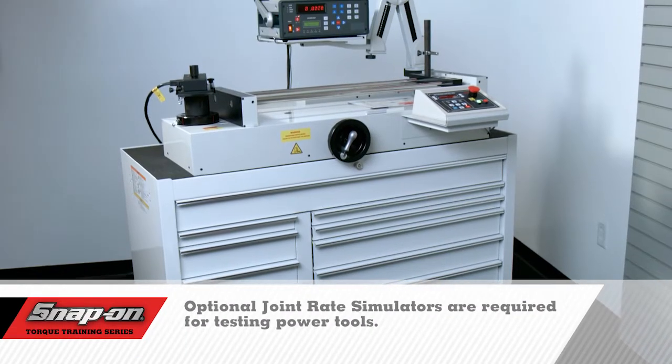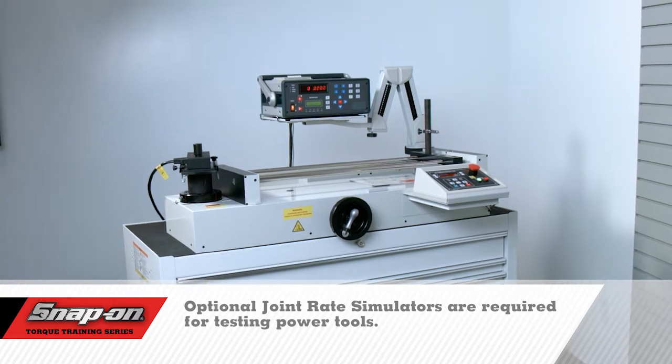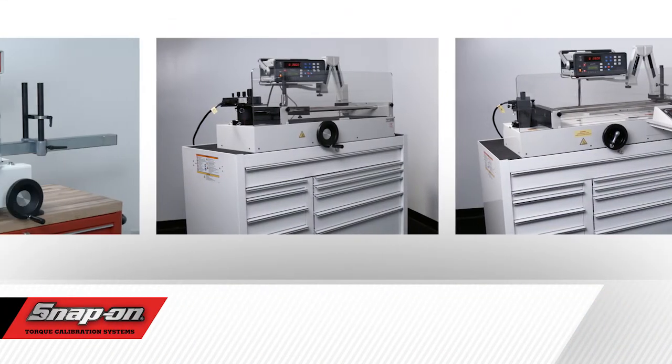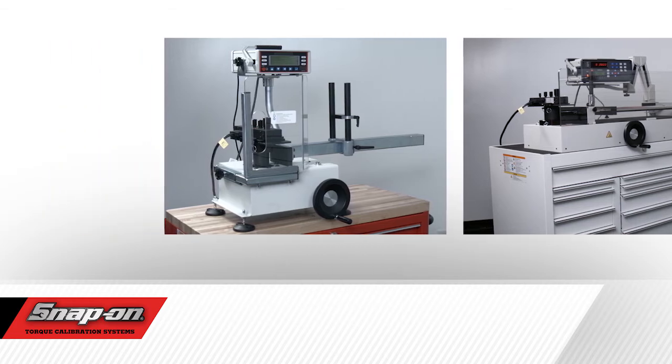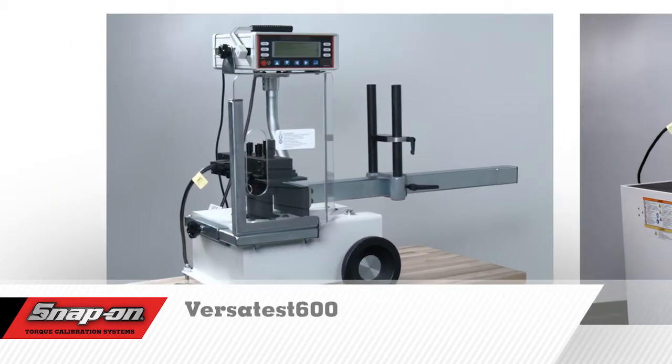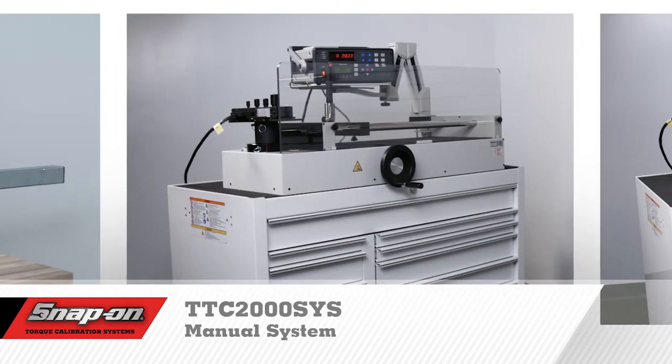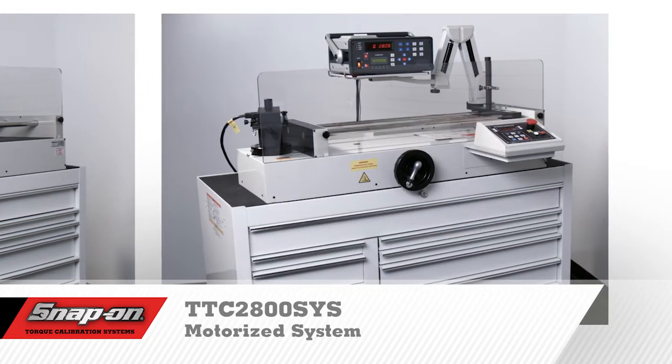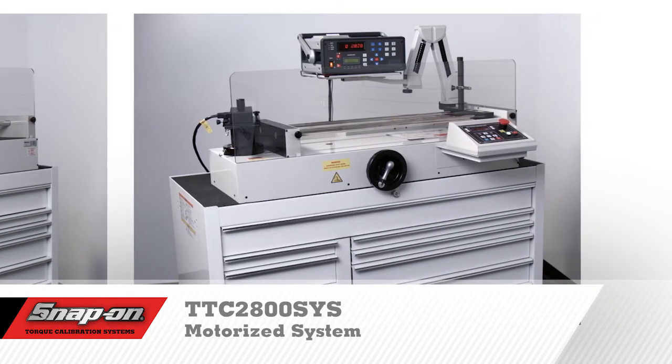Optional joint rate simulators are required for testing power tools. Here's an overview of the three torque calibration systems offered by Snap-On: the Versatest 600, the TTC2000SYS manual system, and the TTC2800SYS motorized system.